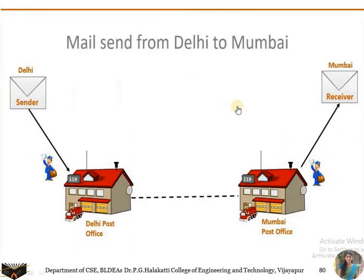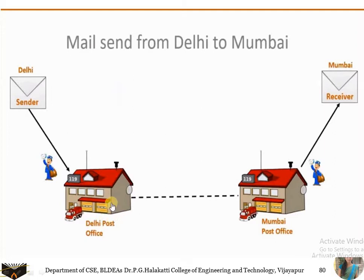Here is an analogy using a traditional postal system. A letter needs to be posted from Delhi to Mumbai. The sender sends the letter to the Delhi post office, which transfers it to the Mumbai post office, and the Mumbai post office delivers it to the receiver. This is the traditional working of a postal system.